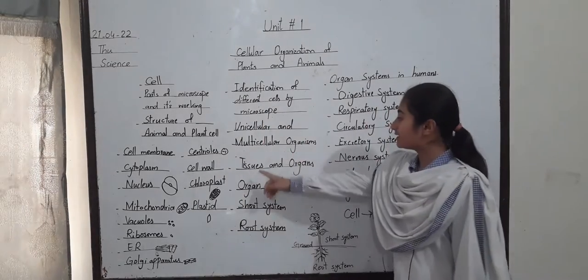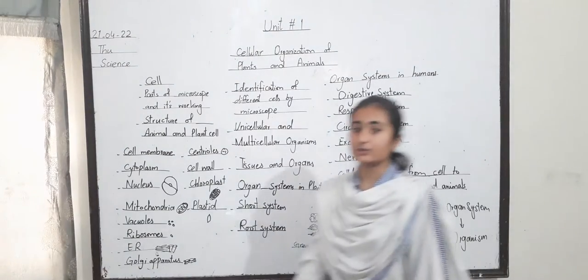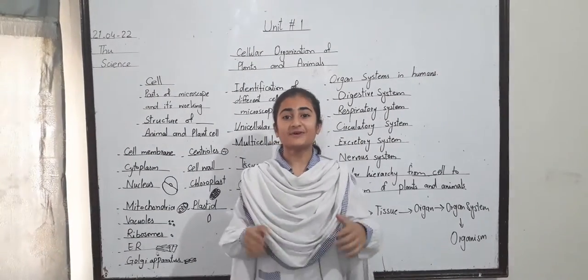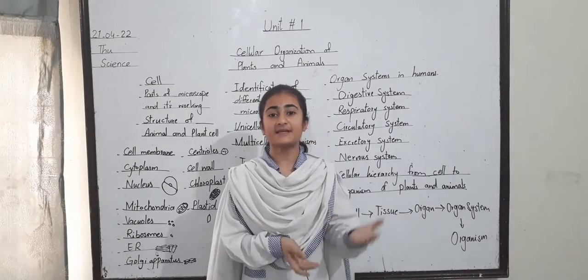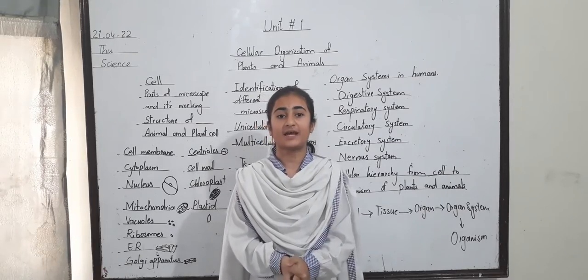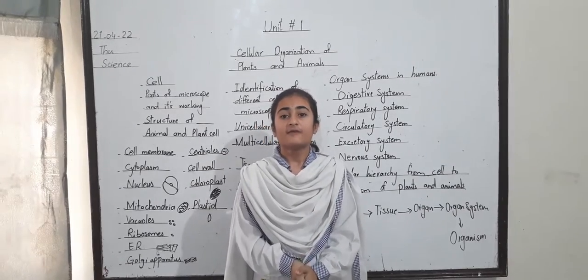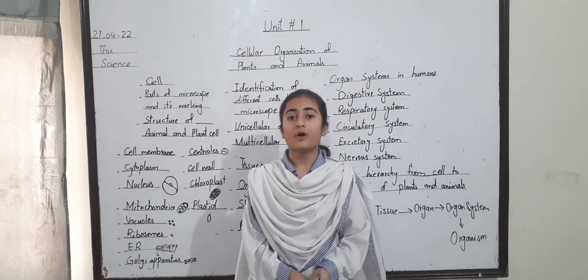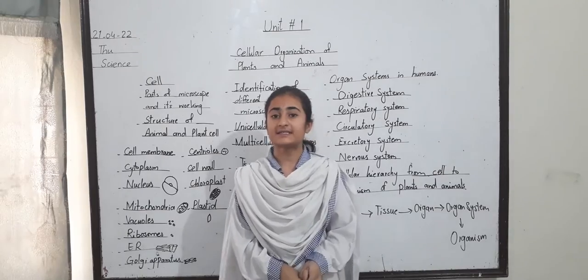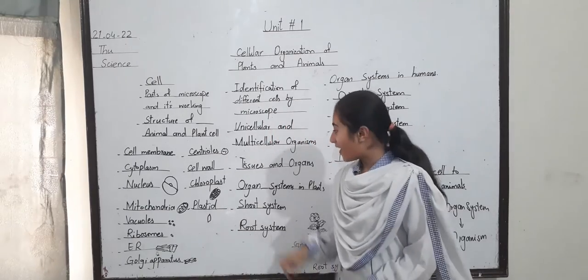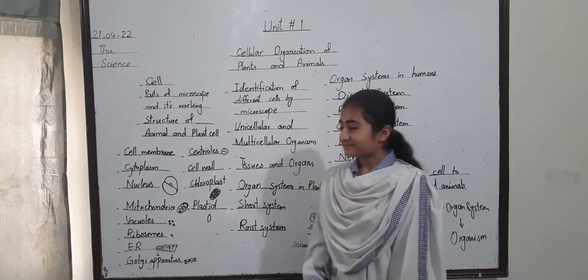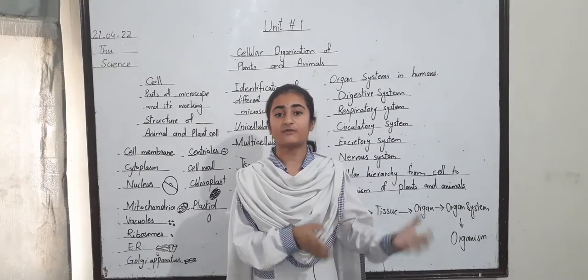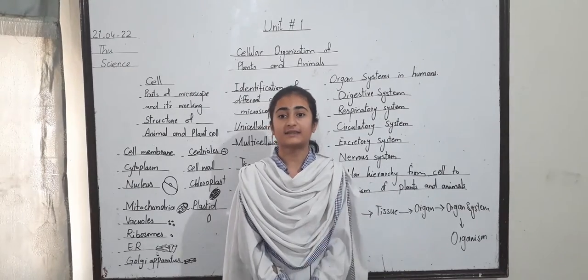Next is tissues and organs. Tissues: when similar cells come together, they form a tissue. For example, connective tissue, muscle tissue, bone tissue, etc. Organs: when different tissues come together, they form an organ. For example, brain, lungs, liver, etc.